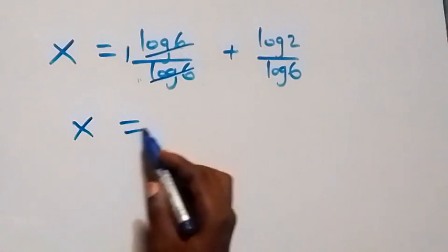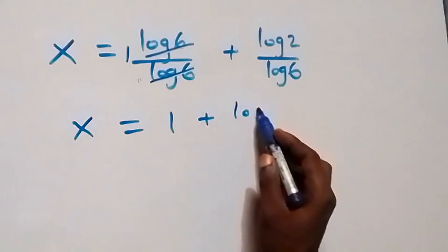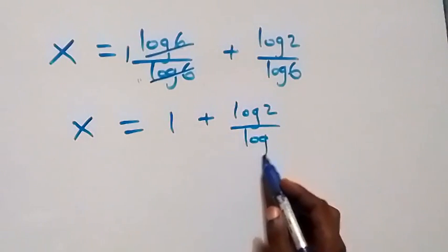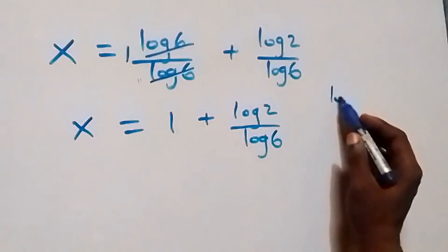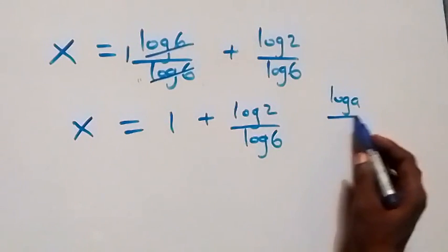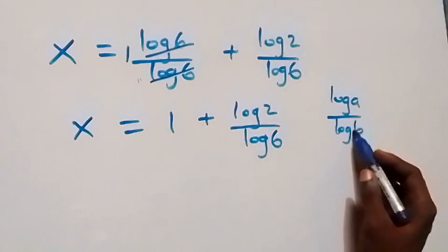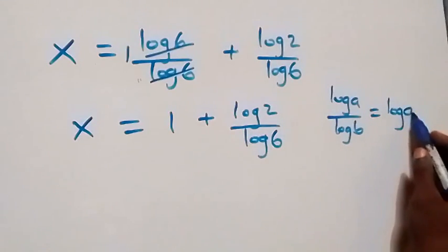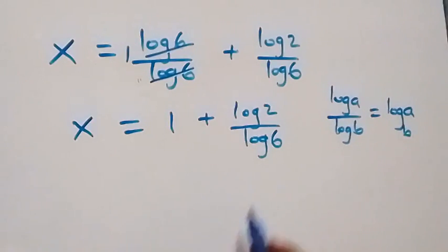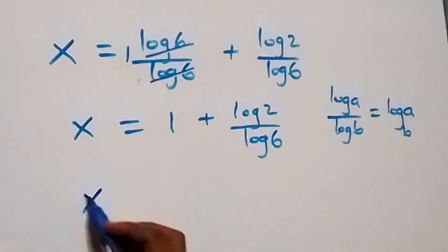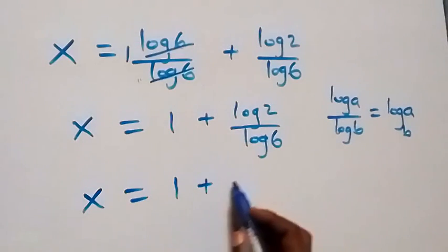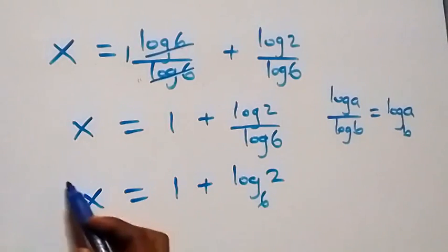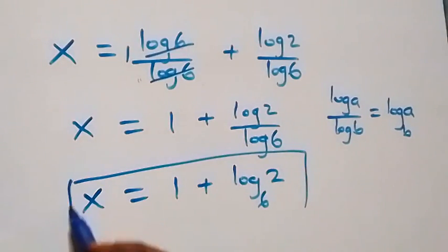The log 6 over log 6 cancels to give us 1, so we have x equals 1 plus log 2 over log 6. Applying the change of base formula — where log a over log b can be written as log a to base b — this becomes x equals 1 plus log 2 to base 6. So here we have the solution to this given problem.